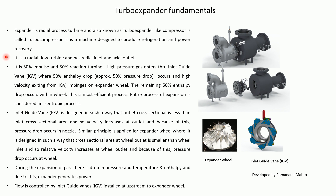It is a 50% Impulse and 50% Reaction Turbine. High pressure gas enters through the Inlet Guide Vane where 50% of the Enthalpy Drop — which may be considered a 50% pressure drop — occurs. The high velocity gas exiting from the IGB impinges on the Expander Wheel, where the remaining 50% Enthalpy Drop occurs within the wheel. The entire expansion process is considered as an Isentropic process.